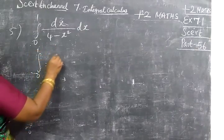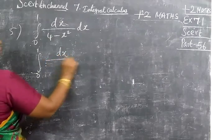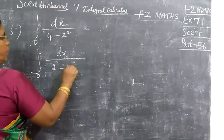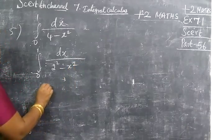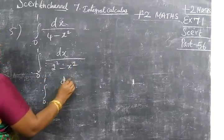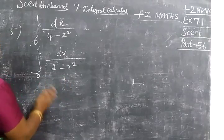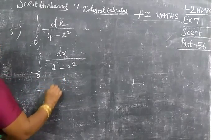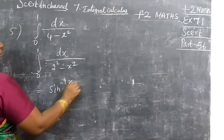So this can be written as integral 0 to 1 dx by 2 square minus x square. So integral 0 to 1, 2 square minus x square, sin inverse x by 2.